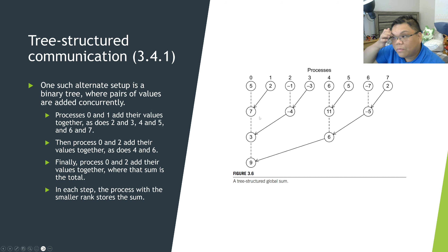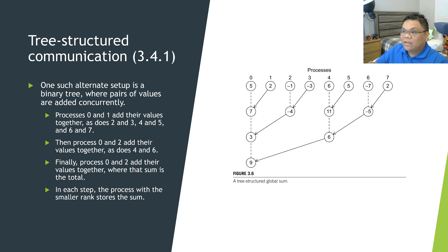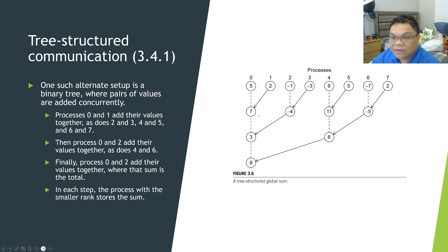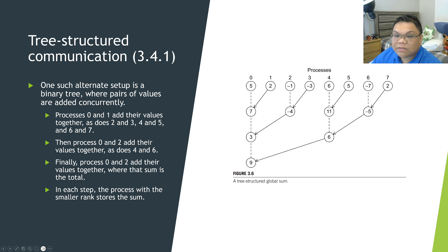In that step, in a perfect world, we could imagine doing all of these additions concurrently — 4 additions possibly all at the same time. Now we have not 8 values to add but 4. Then we add them pair by pair: process 0 and process 2 add their values, processes 4 and 6 add their values — 2 additions at the same time, in theory. Now we have 2 more values to add.